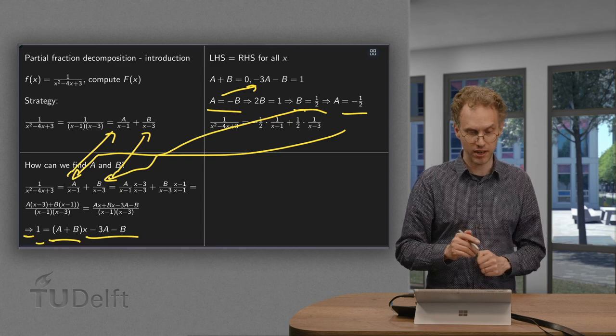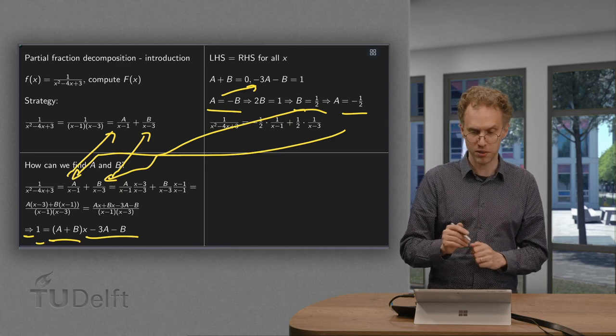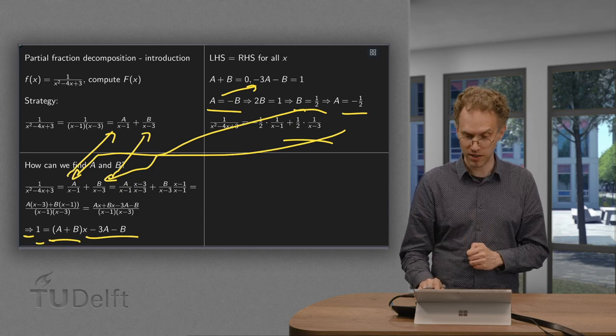So we have 1 over (x squared minus 4x plus 3) equals minus 1/2 times 1 over (x minus 1) plus 1/2 times 1 over (x minus 3).